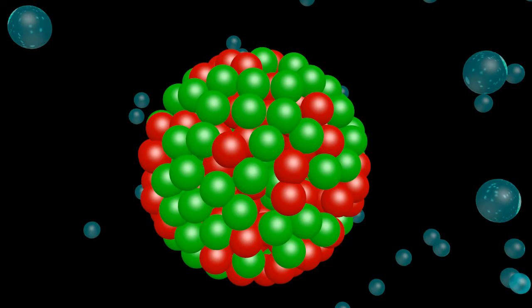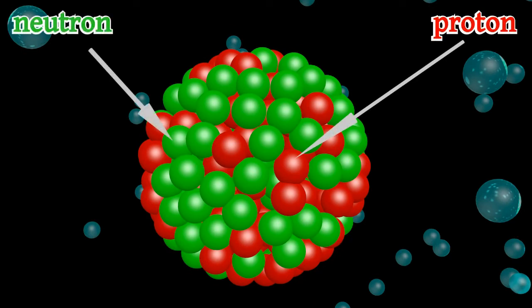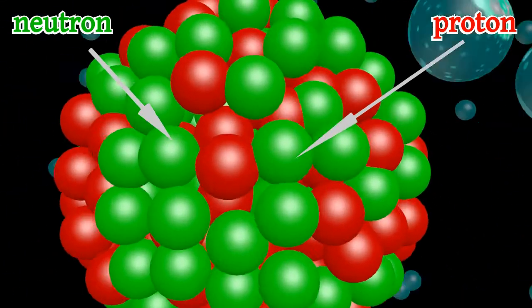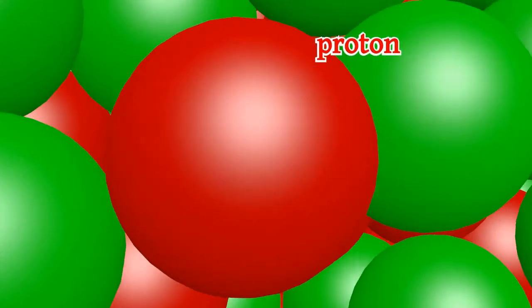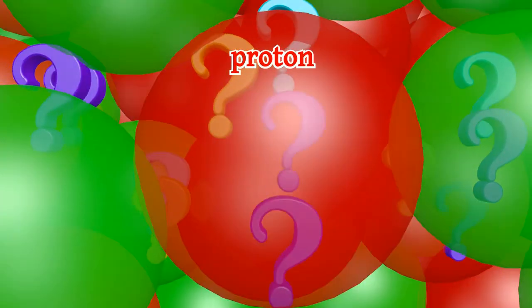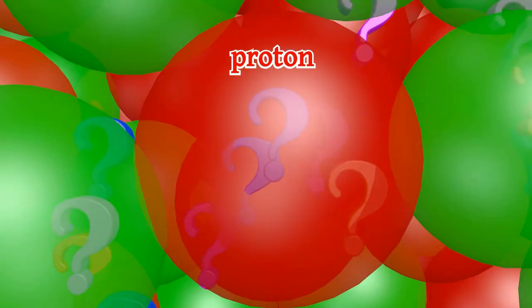What is the structure of the nucleus? In general, the nucleus consists of a number of protons and neutrons. In the most simple case of the hydrogen atom, the nucleus consists of one proton. So we can ask, what is the structure of the proton?